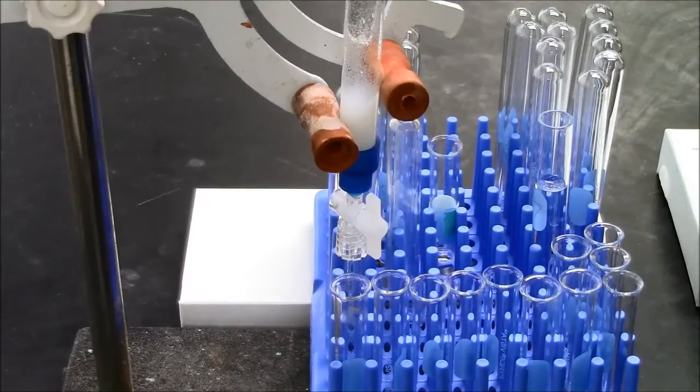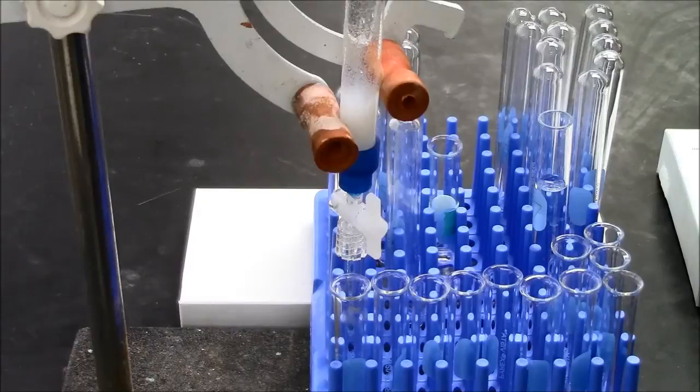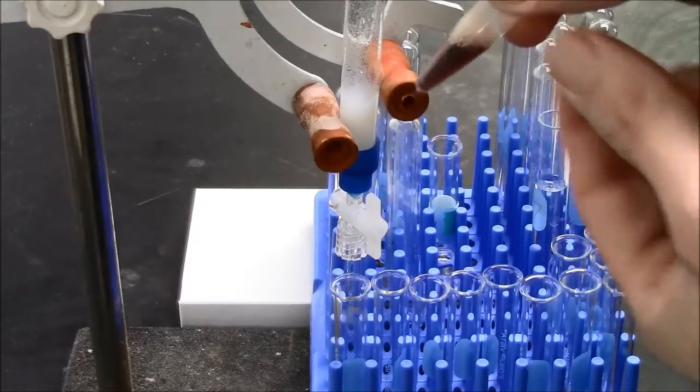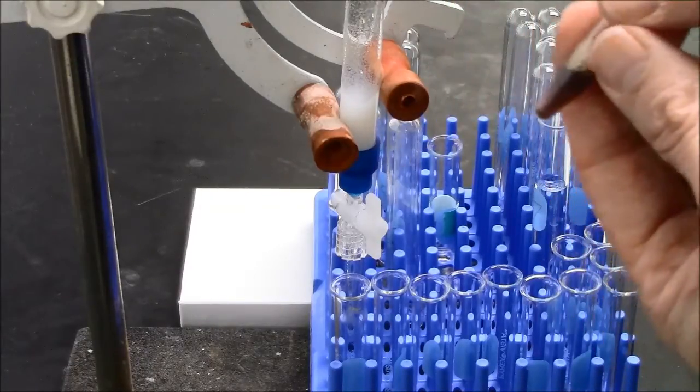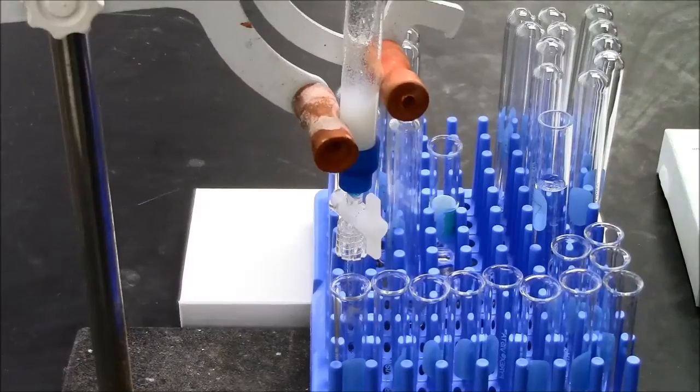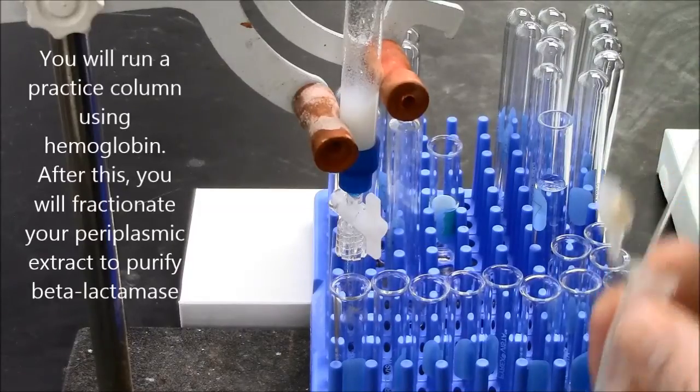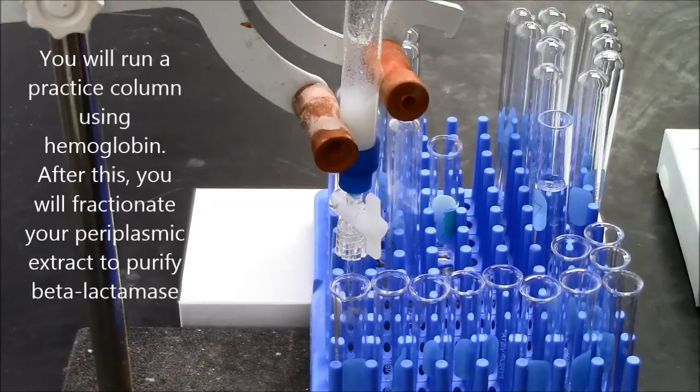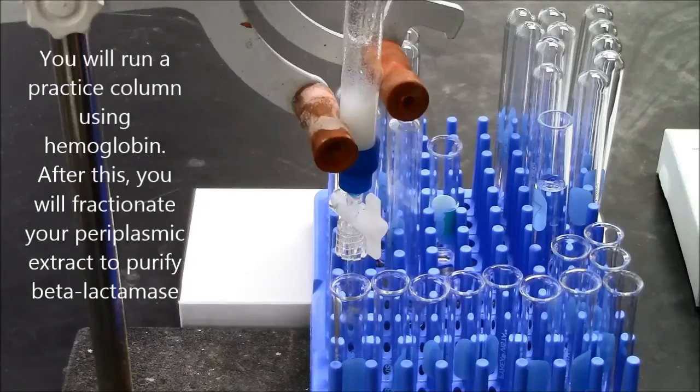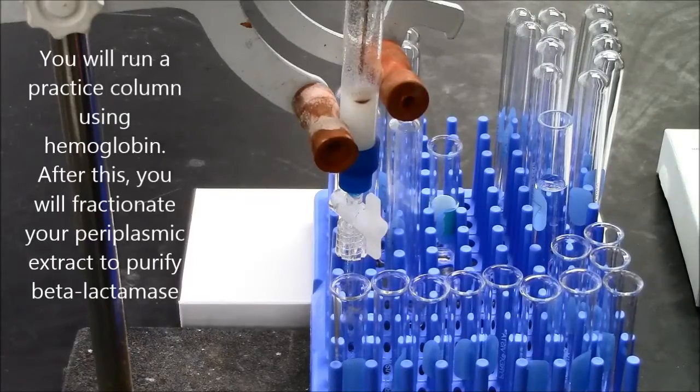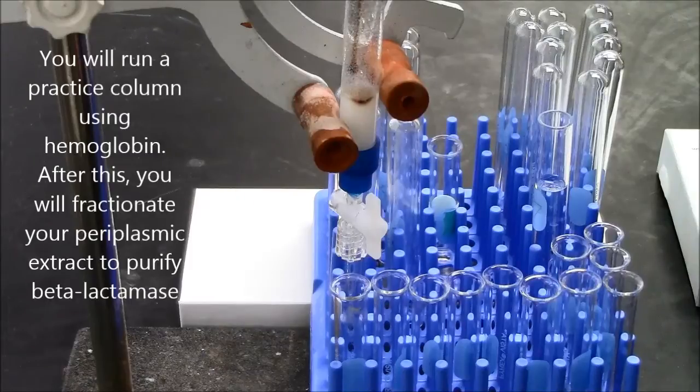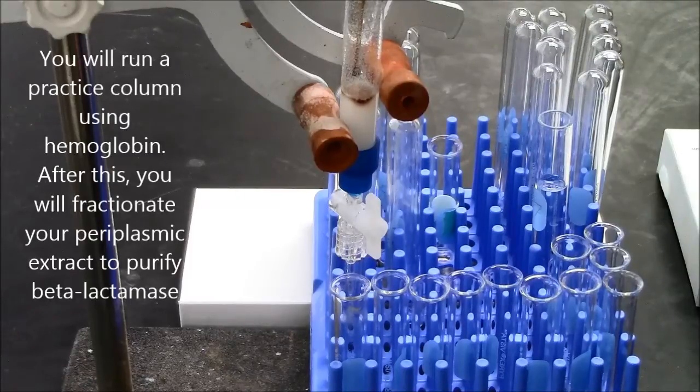I've washed it with about 20 mLs of the Tris buffer to equilibrate it. My sample, in this case, is a solution of hemoglobin, which is a red protein from blood. I'm loading about half a milliliter onto my column. So I'm using a Pasteur pipette. I want to gently drip the protein solution on top of the column, trying not to disturb the gel bed.